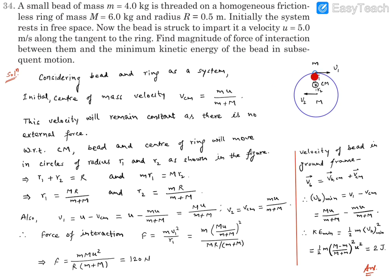This is feasible because the bead moves in a circle, so its velocity direction changes through all directions — there will be one instant where it is opposite to the CM velocity. The minimum velocity of the bead is v1 − vcm = (M − m)/(M + m) · u. Therefore the minimum kinetic energy is (1/2)m·[(M − m)/(M + m)]²·u². Substituting all known values, the answer comes out to be 2 joules.